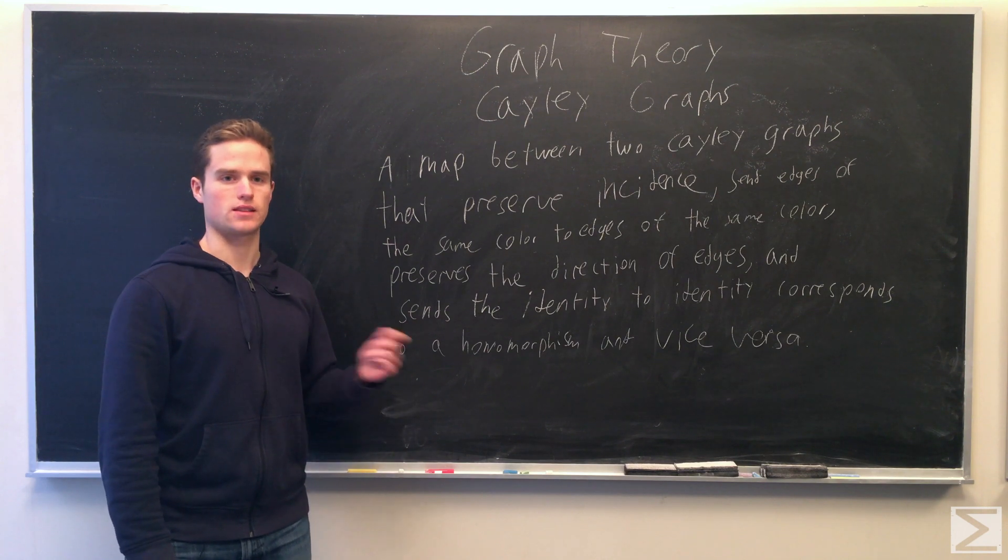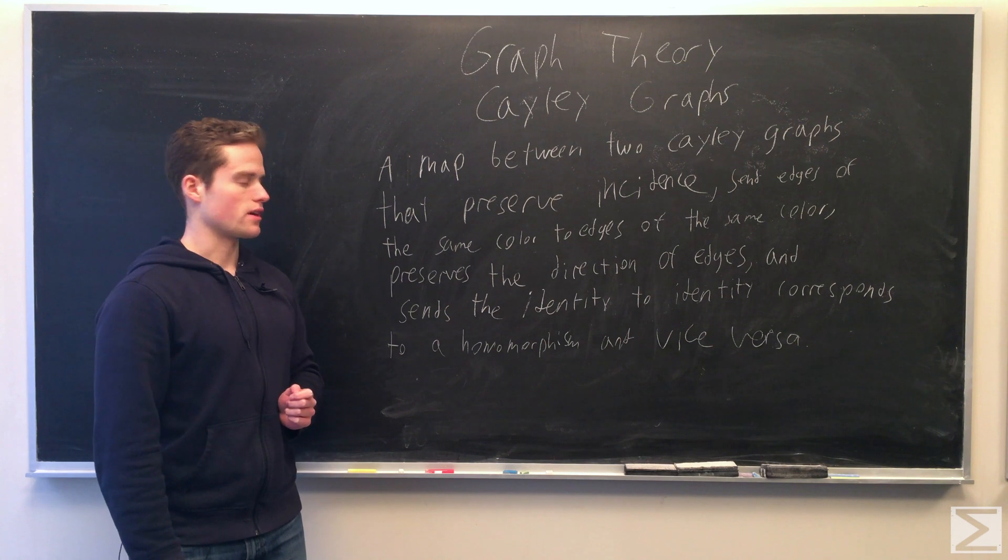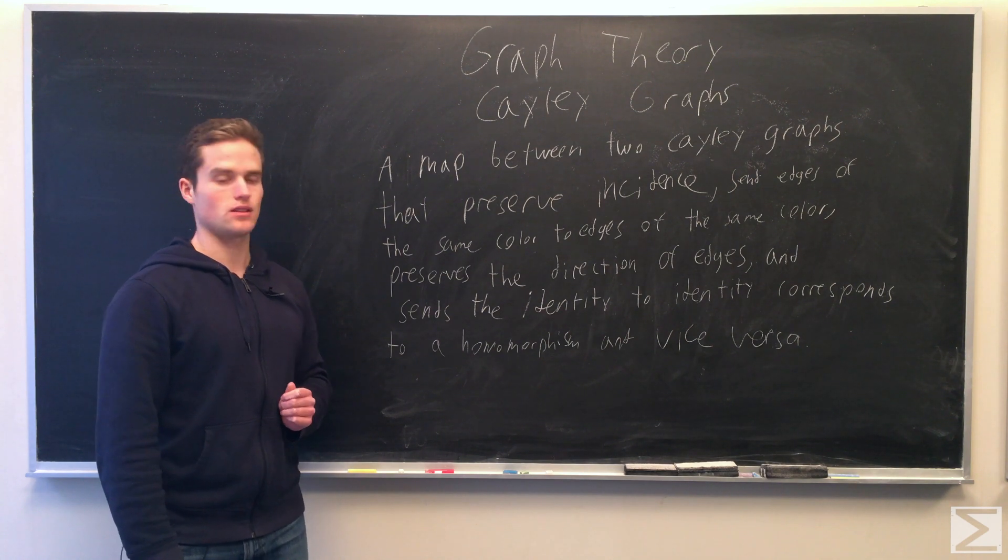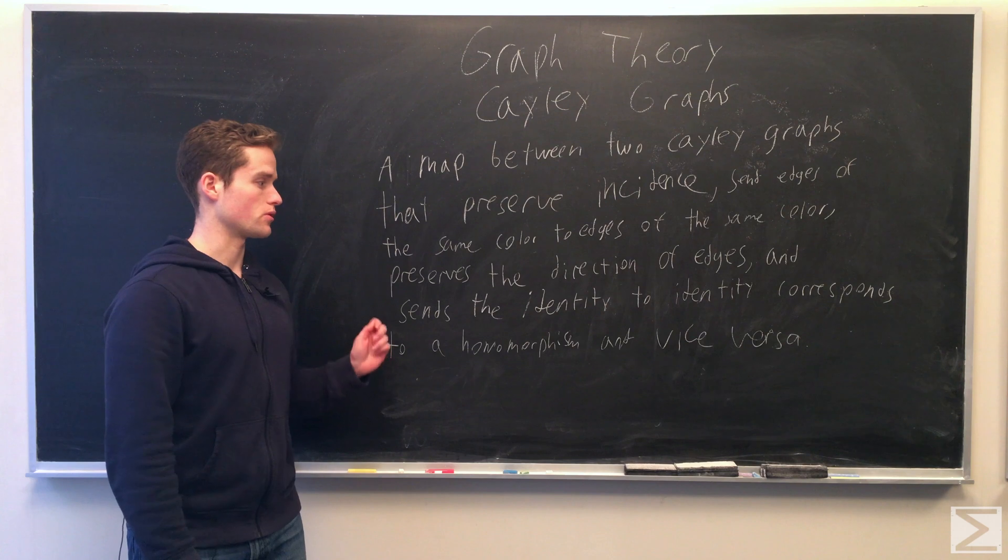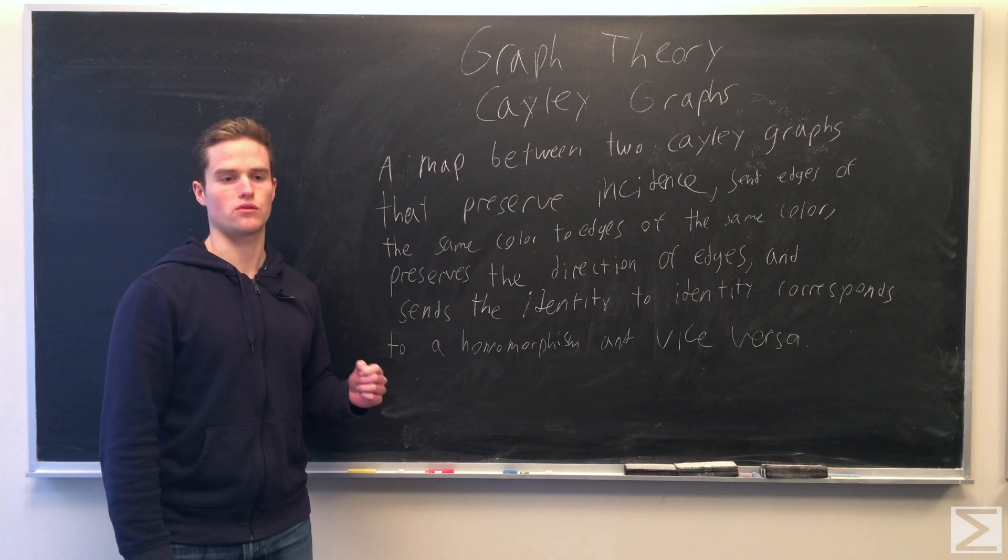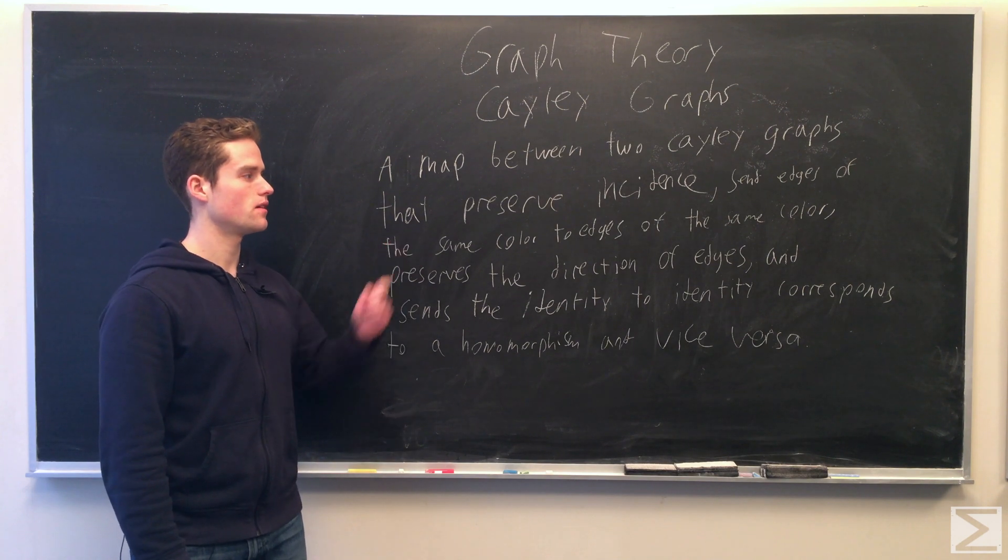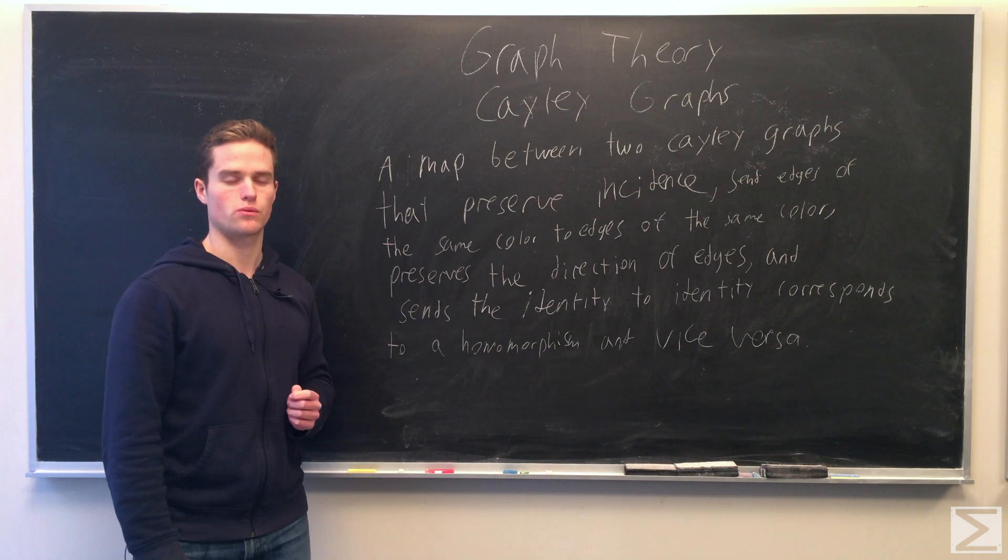It preserves direction and sends identity to identity. This will correspond to a homomorphism between the two groups. And also a homomorphism between the two groups will correspond to a map of this kind between two graphs.